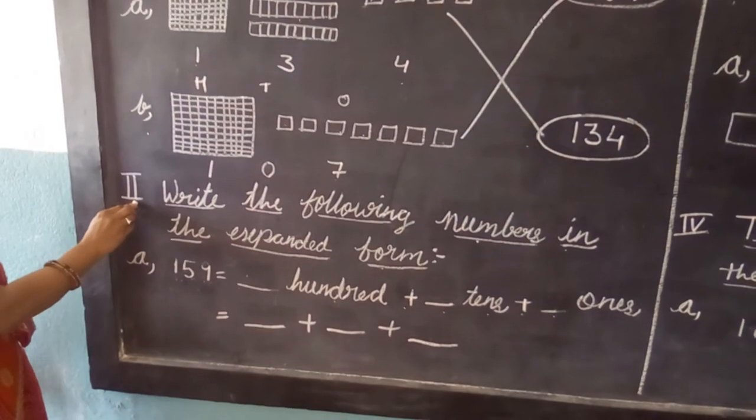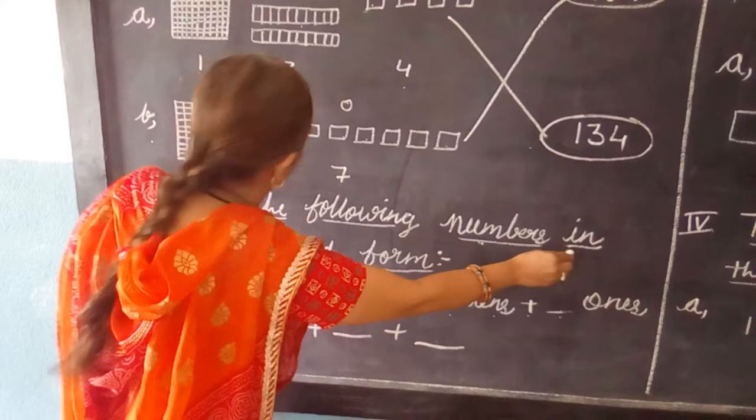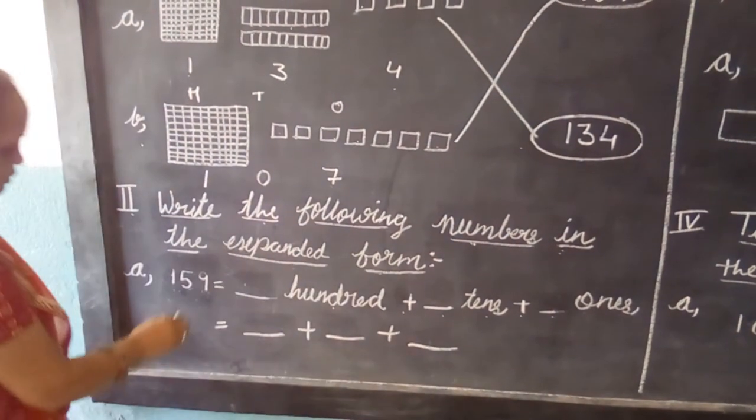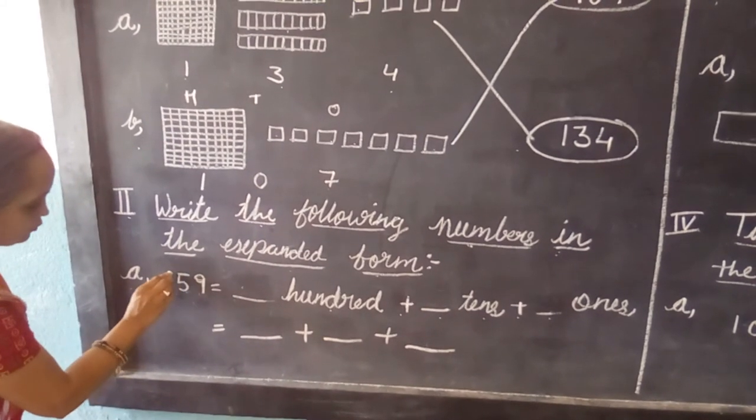Let's now continue. Our next question is question 2: write the following numbers in expanded form. Here our question is, in question 2, the question is 159.